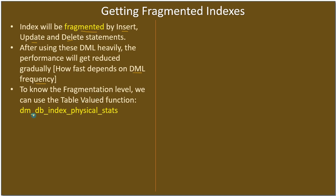To know the fragmentation level we can use the table-valued function called dm_db_index_physical_stats. This function provides statistics about the index, and from these statistics we can get the index fragmentation percentage.